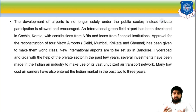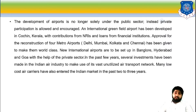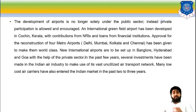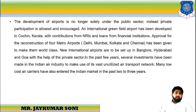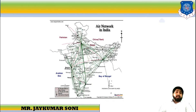An International Green Field Airport has also been developed in Kochi. Many NRI people and loans from financial institutions have helped India contribute to the improvement of air transport. The air network data for the year 2001 can be observed in the map shown.